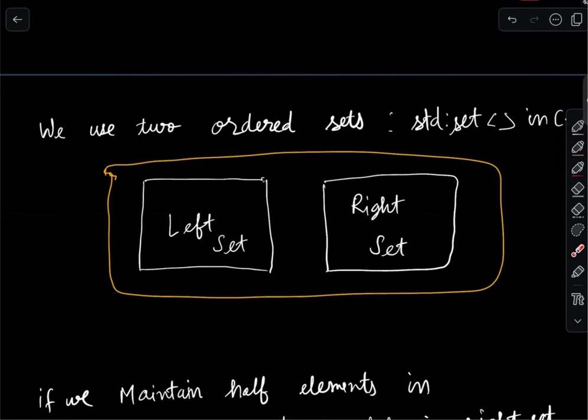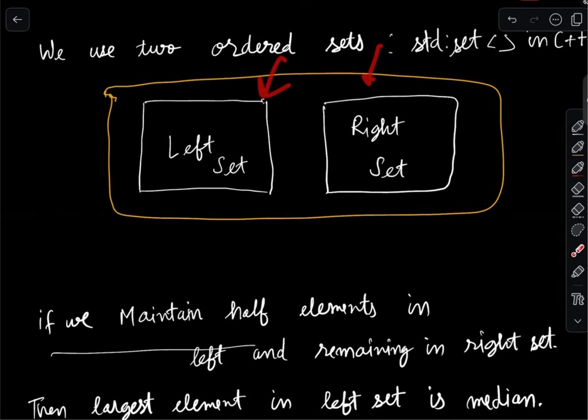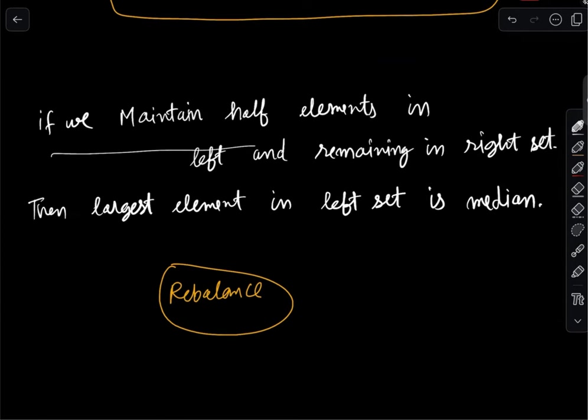After every insert or erase, the size condition can be disturbed, so we need to perform a rebalance. Let's say before an operation we have z elements in the left side and z in the right — they are equal. Then one insert gives us z+1 and z, which is still acceptable.